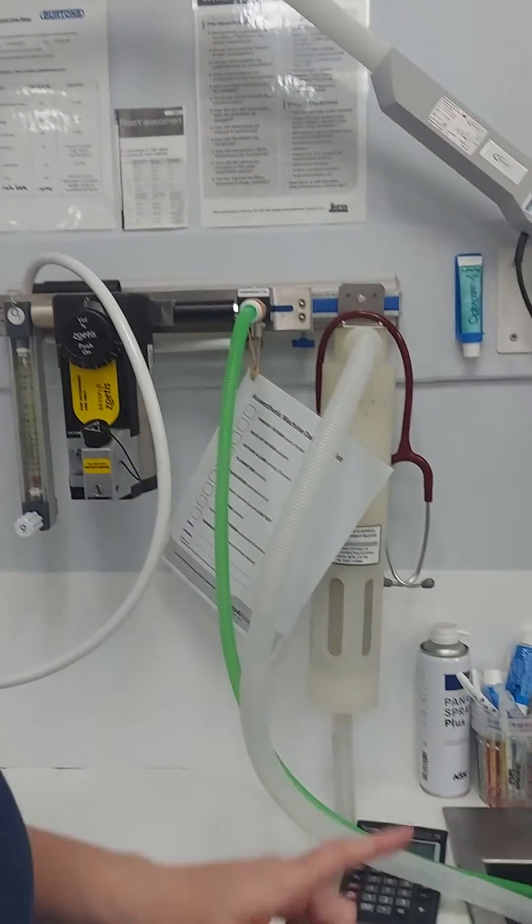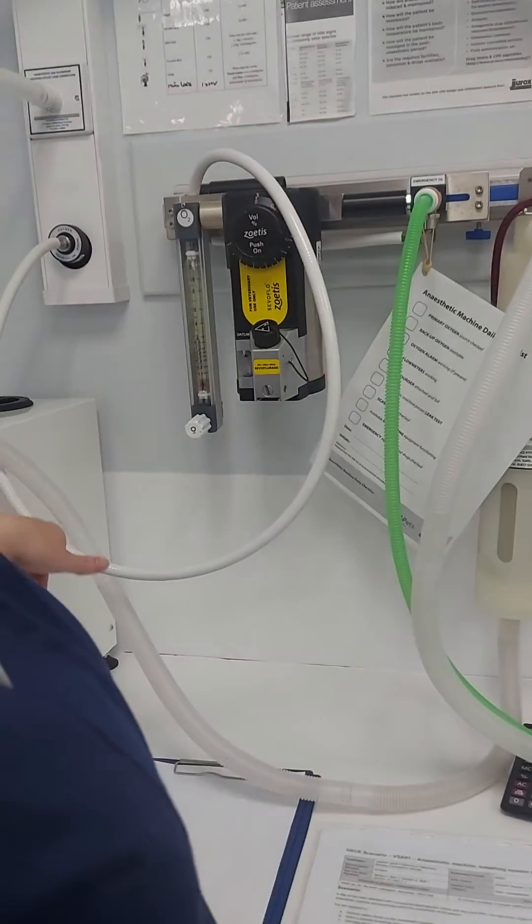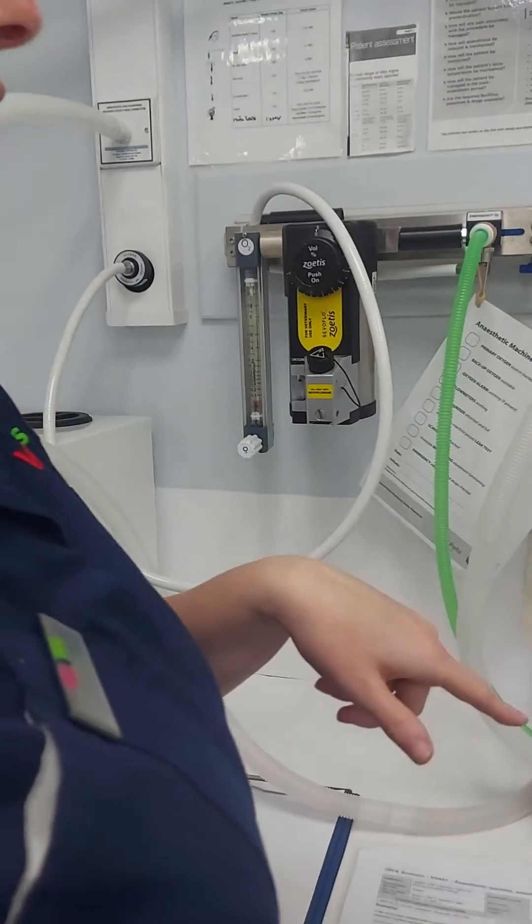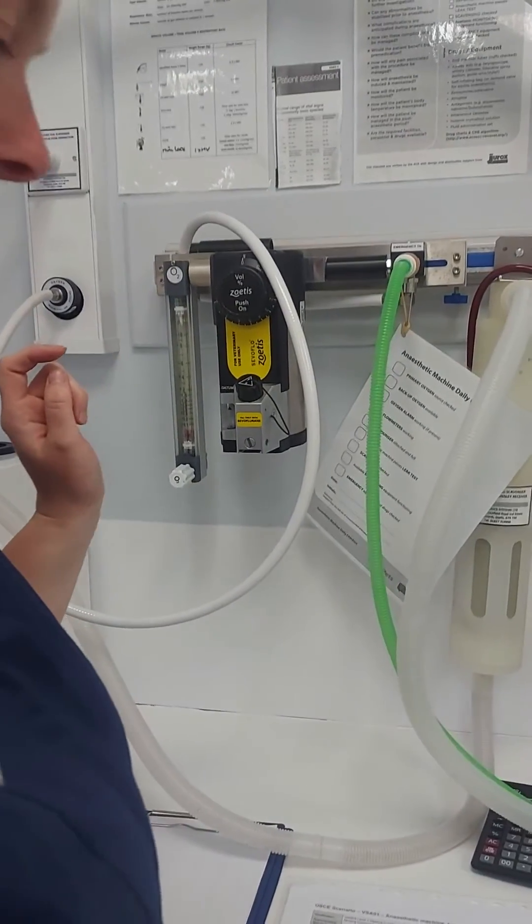And then in your trolley, you would also check that your cylinder is on, has the in-use label. And the oxygen is flowing around and that you've fully suppressed your oxygen flush. So, that's your circuit.